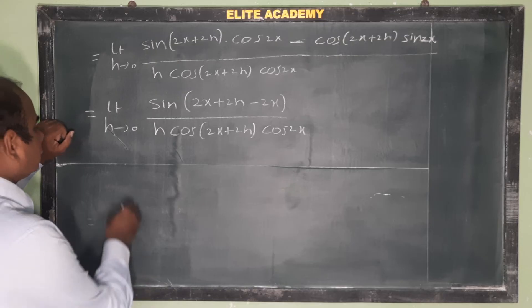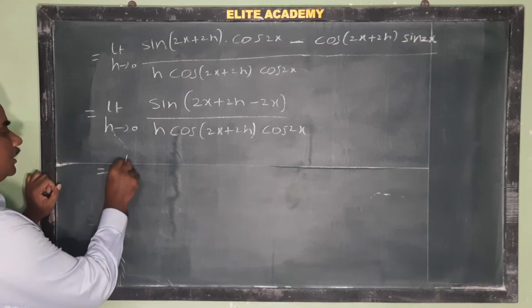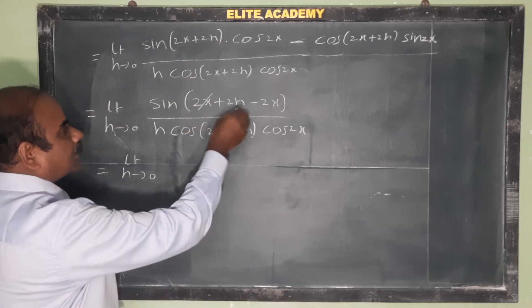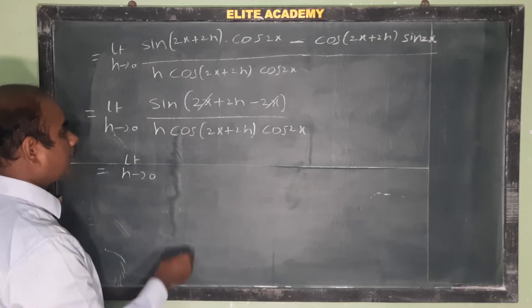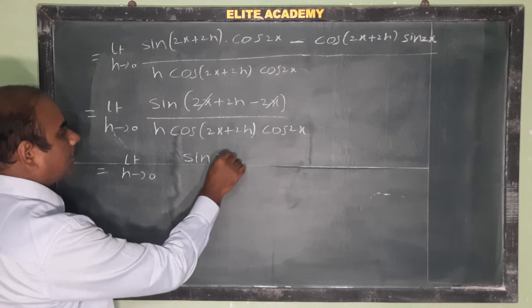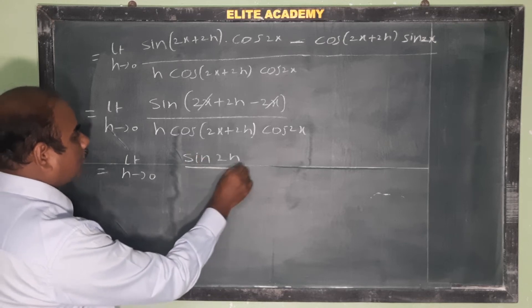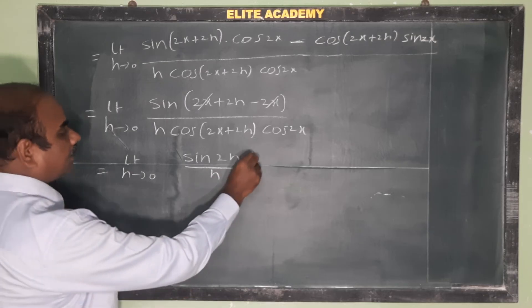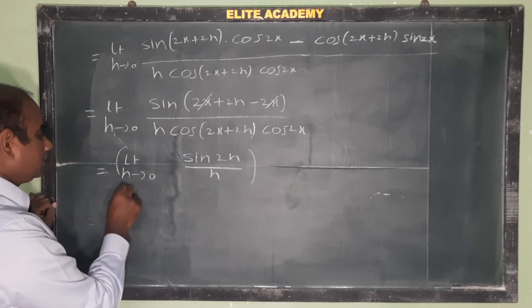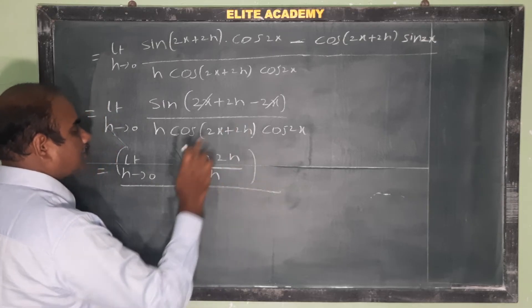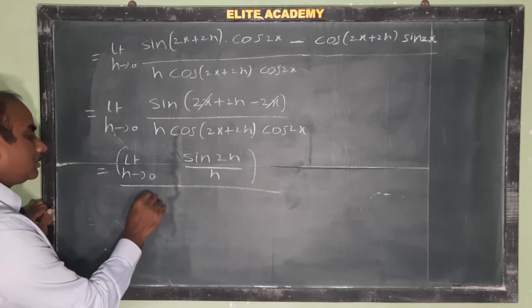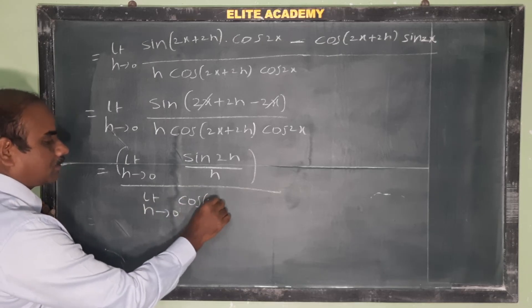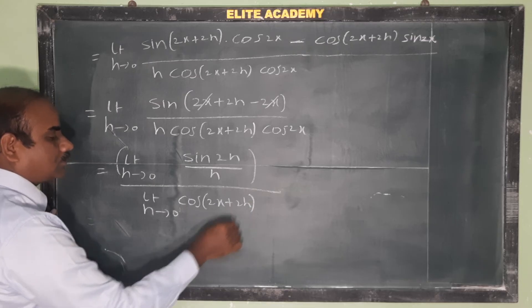That equals limit h tends to 0, 2x plus 2x minus 2x cancel, so remaining is sin 2h by h. This is a standard limit, so we can separate the functions. Limit h tends to 0, cos(2x plus 2h).